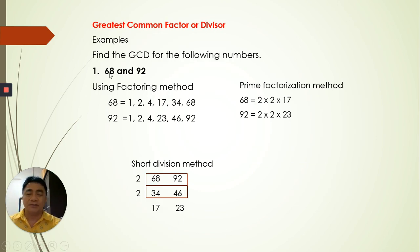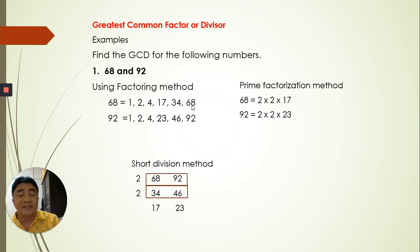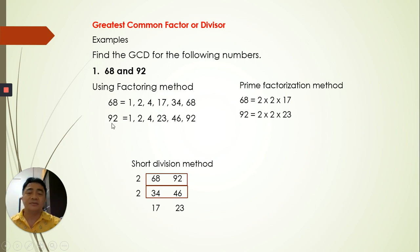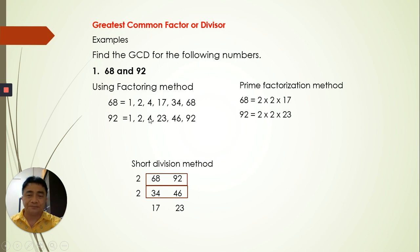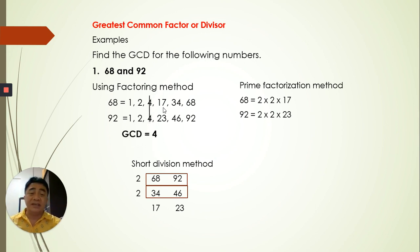Let's look at a new example with two positive integers. Using the factoring method for 68: factors are 1, 2, 4, 17, 34, 68 — since 1 times 68 is 68, 2 times 34 is 68, and 4 times 17 is 68. For 92, we list its factors similarly. Looking at the common factors: 1 and 2 are common but less. The greatest common factor is 4, so the GCD is 4.